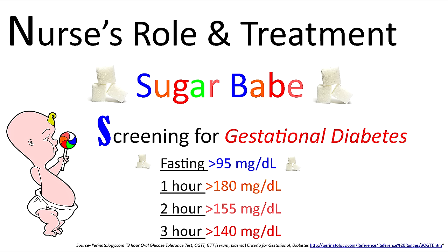You want to be familiar with the abnormal results for each blood draw time. At fasting, an abnormal result would be greater than 95 milligrams per deciliter. At one hour, it would be greater than 180. Two hours would be greater than 155. And at three hours, it would be greater than 140. Notice that as time goes from one hour to two hours to three hours, the glucose level should be decreasing.